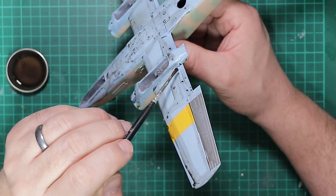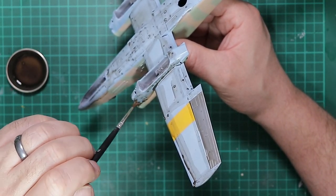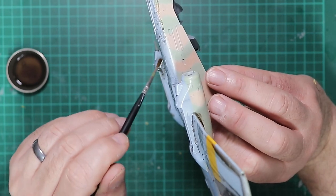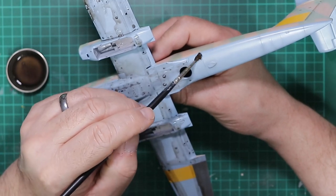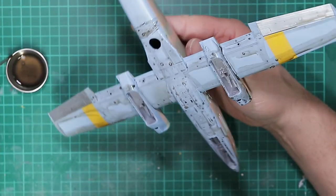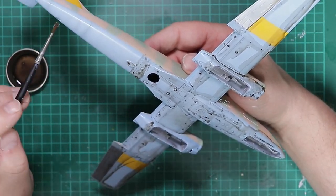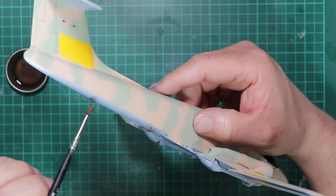Remember to get everywhere. You'll notice we've still not attached the flaps. They are painted. They're just asking to get broken off while we're still handling the model to such a degree.